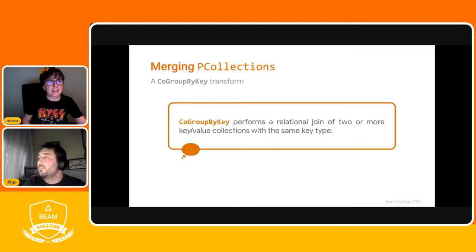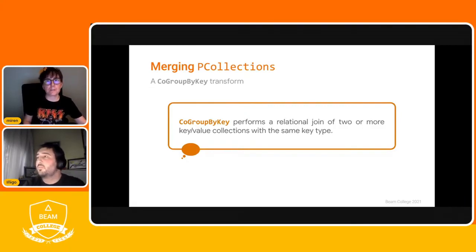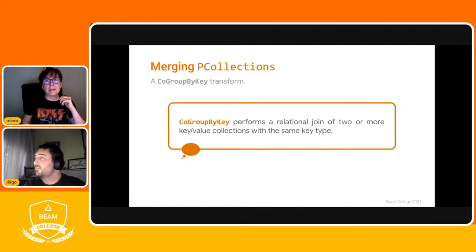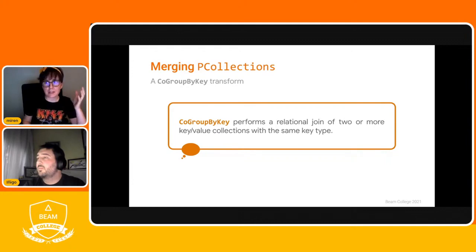The next way of merging two P-collections is CoGroupByKey, another core Apache Beam transform. This transform performs a relational join between two P-collections. The collections must be keyed — the elements must be key-value pairs — and the keys of the input collections must be of the same type.